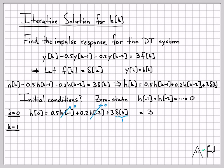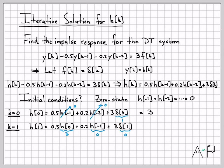For K equals one, replacing all K's gives H of one equals 0.5 times H of zero, plus 0.2 times H of minus one, plus three times delta of one. H of zero is three (just solved), H of minus one is still zero, and delta of one equals zero since its argument is non-zero. So we get 0.5 times three, and H of one equals 1.5.